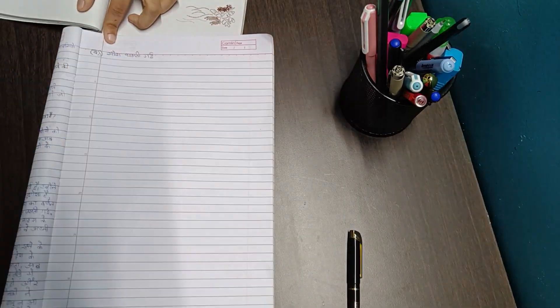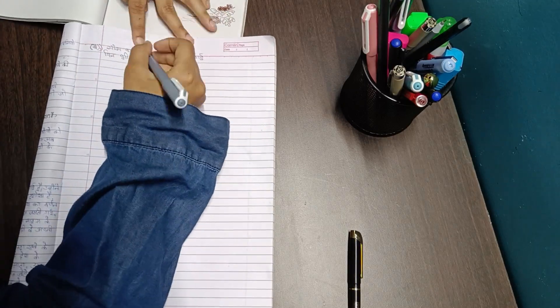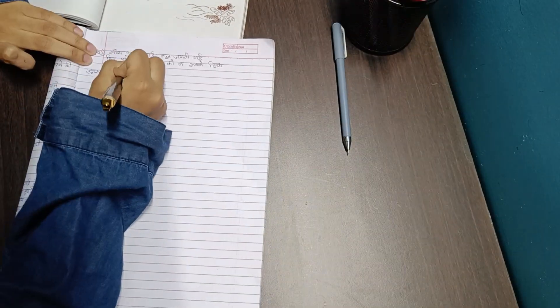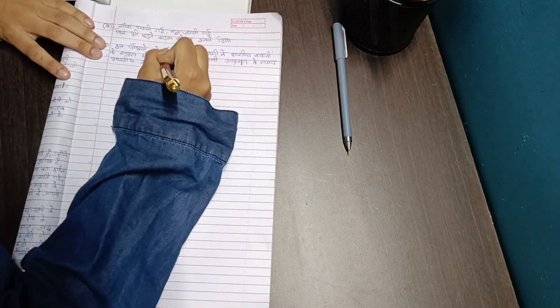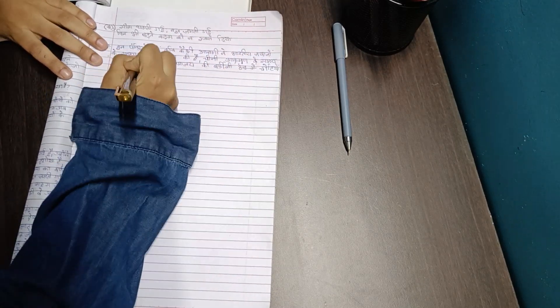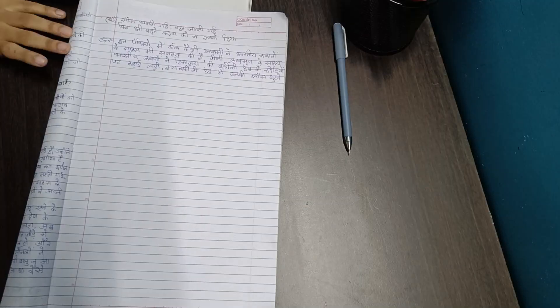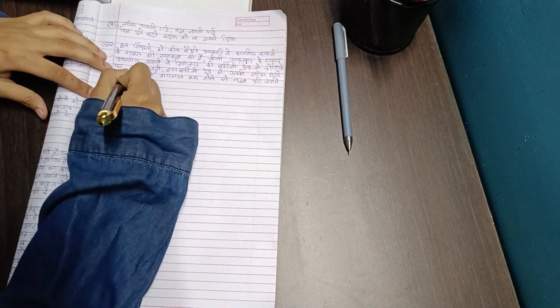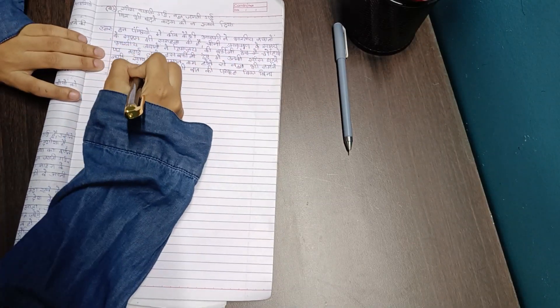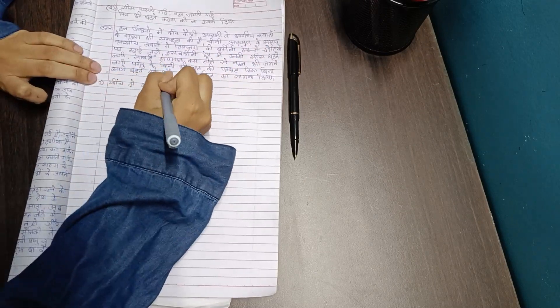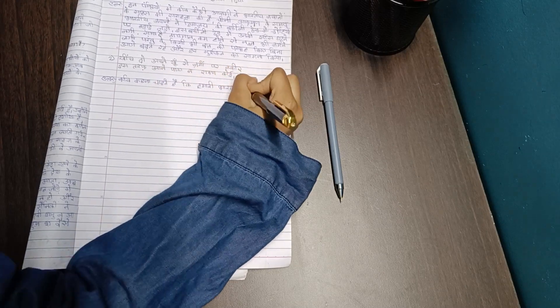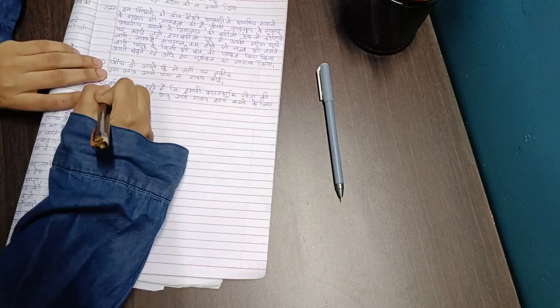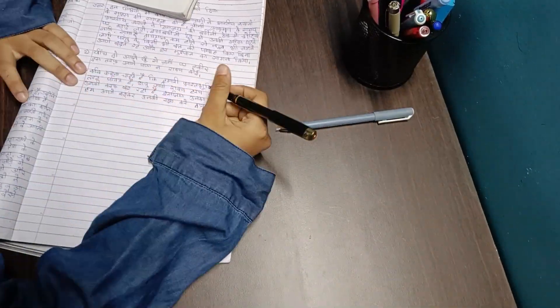I was wearing a shrug because the winters are almost here. I was writing the notes of the chapter Kar Chale Hum Fida by Kafi Azmi. This chapter has already been completed in school and I wrote most of the notes in the school itself because we are supposed to write them in class and show it to our teacher. That is why I have written most of the notes, but I'm still left with all the notes from the chapter Atmatran, so I'll complete those notes as soon as possible.